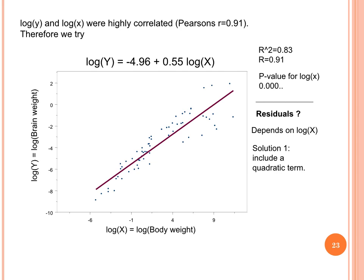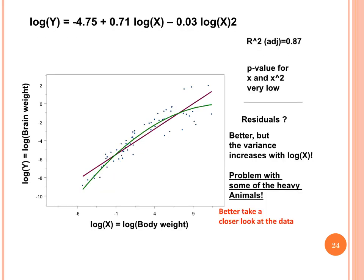The R-squared is now very high, at 83%. However, Patrick noticed that the residuals depend on log X — they increase as log X increases. Including a quadratic term into the model further improves R-squared to 87%. But there is an increased variance for the very heavyweight animals.